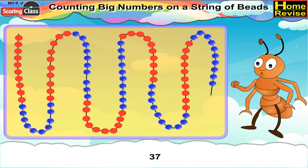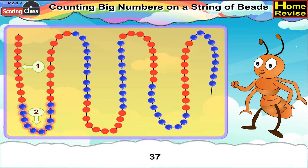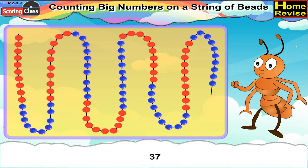Now number 37. For number 37, we have 10 red beads, followed by 10 blue beads. Then again 10 red beads. And now count 7 more blue beads. Place the clip after 7 more blue beads. And this is your number 37.